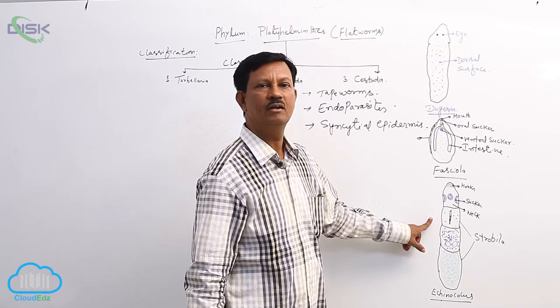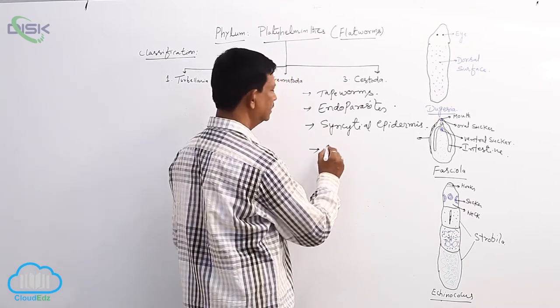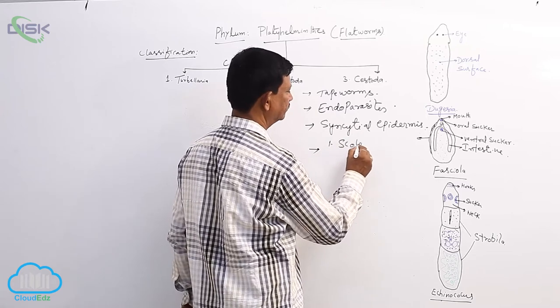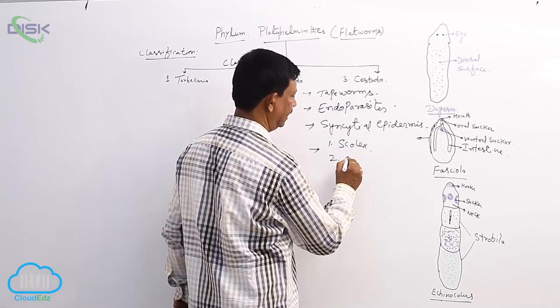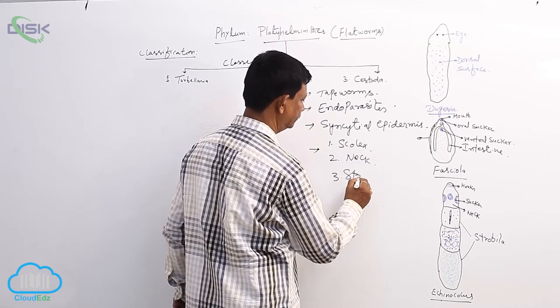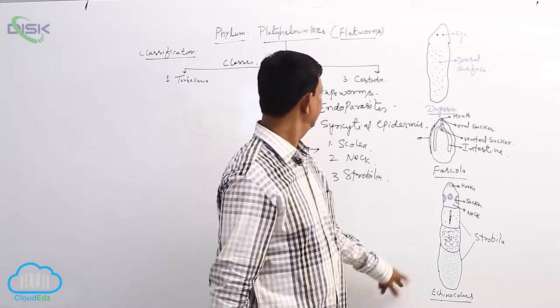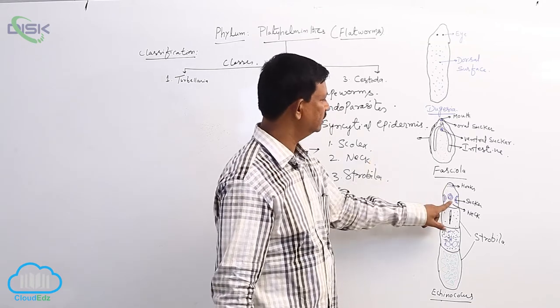The body is mainly divided into three parts: scolex, neck, and strobila. For example, in Echinococcus, at the anterior region of the body, this region is known as the scolex region.